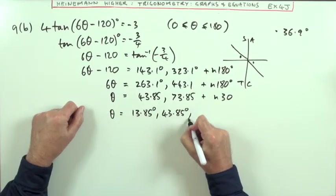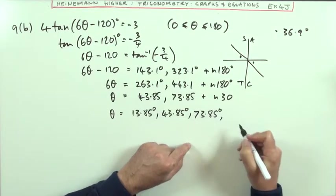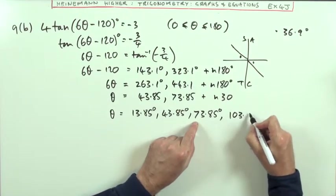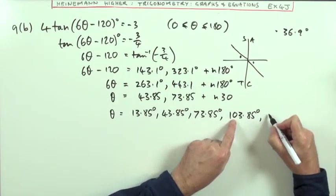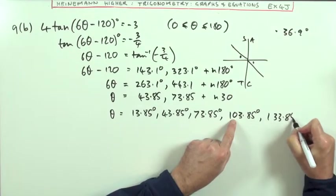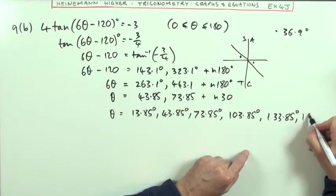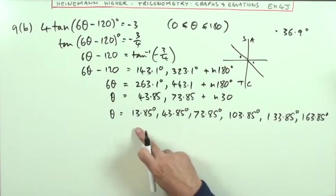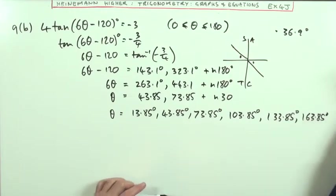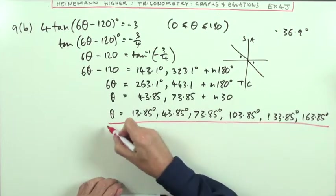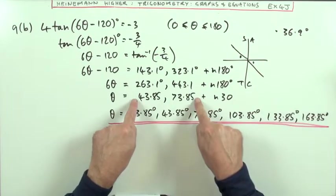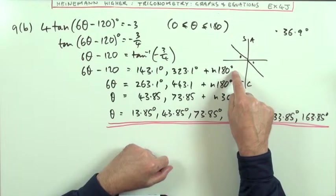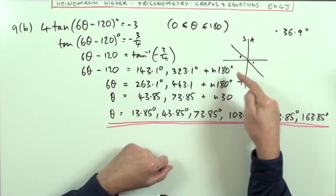Then adding 30 gives 103.85, then 133.85, then 163.85, reaching the 180 limit. So I've got six answers in this case—quite a few using the general solution by stepping forward as many wavelengths as needed within that interval.